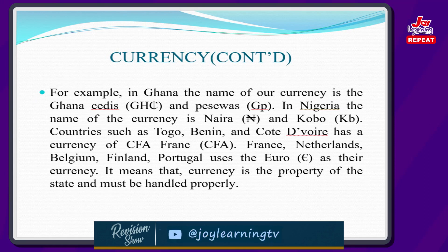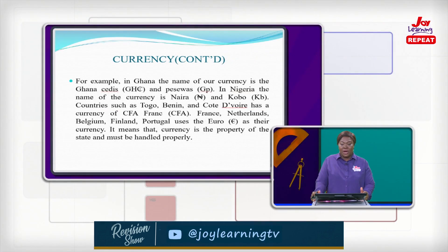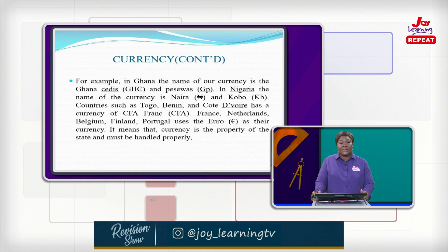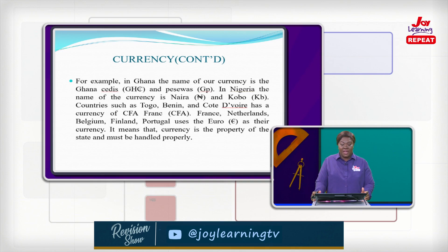For example, in Ghana, the name of our currency is the Ghana Cedi and Pesewa. In Nigeria, the name of the currency is Naira and Kobo. Countries such as Togo, Benin, and Cote d'Ivoire have the currency of CFA francs, and the Netherlands, Belgium, Finland, and Portugal use the euro as their currency.